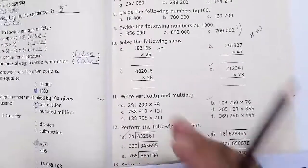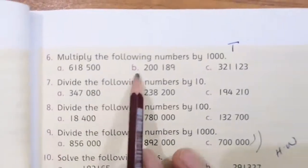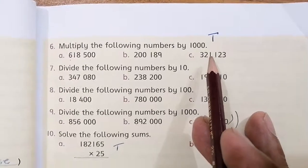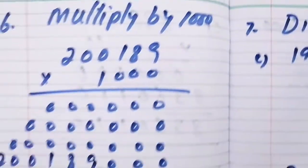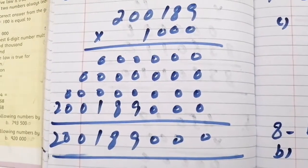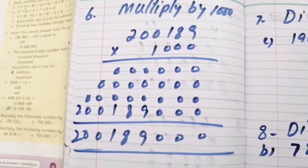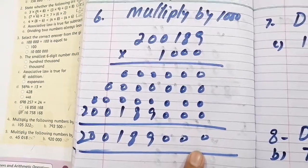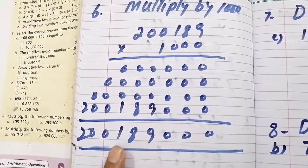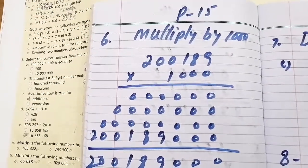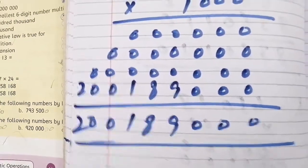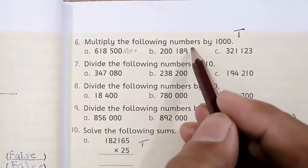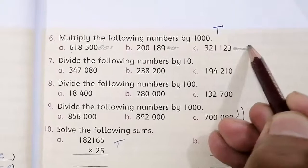Then, question number 6 is multiply the following numbers by 1,000. I have done this with 1,000. I have done this with 3, 2, 3, 4, 5, and 6 columns. Now, 3 columns are added while multiplying by 1,000. So add 3 columns and add 3 columns.